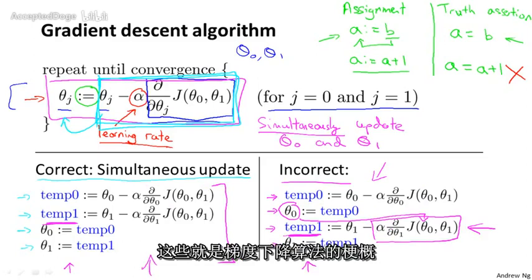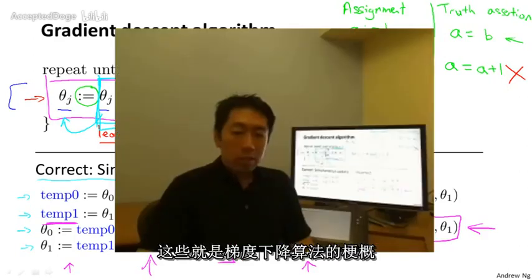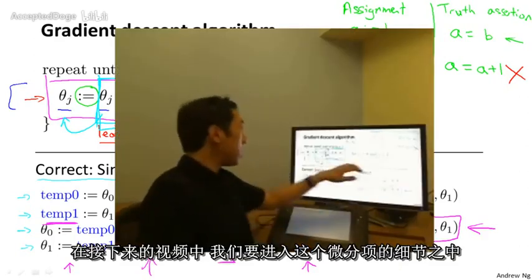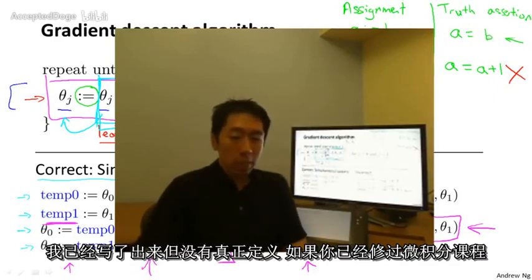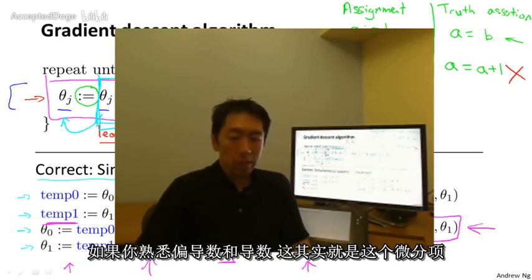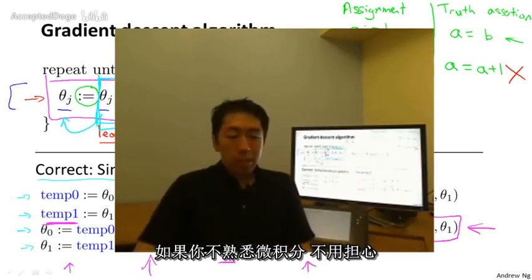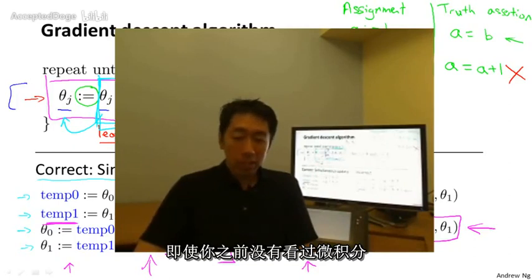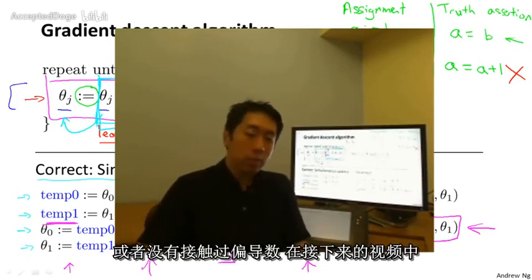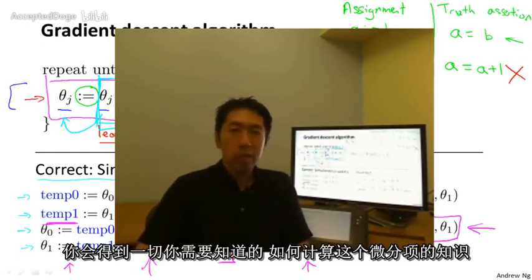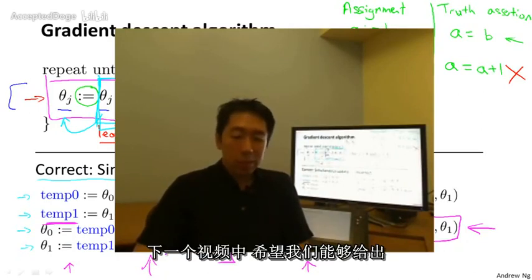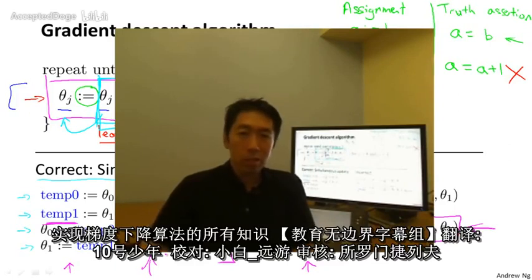So that's the outline of the gradient descent algorithm. In the next video, we're going to go into the details of the derivative term, which I wrote out but didn't fully define. If you've taken calculus and are familiar with partial derivatives, that's exactly what that derivative term is. But if you aren't familiar with calculus, don't worry — the next video will give you all the intuitions and everything you need to compute that derivative term. With that, hopefully the next video will give you all the intuitions you need to apply gradient descent.